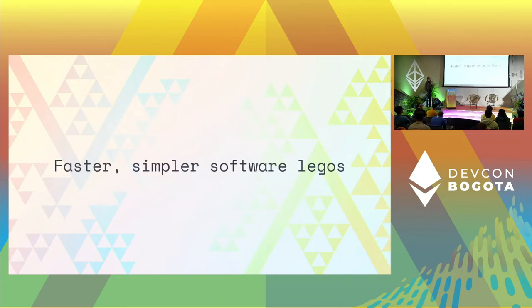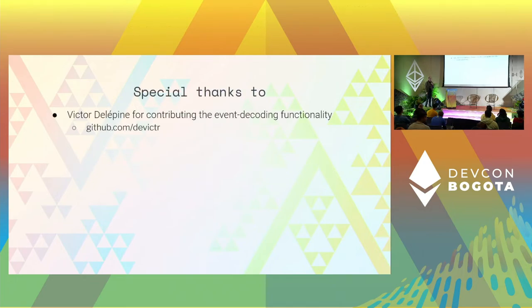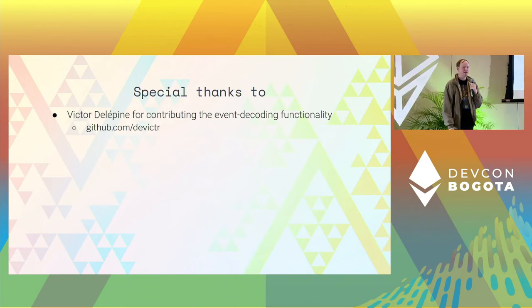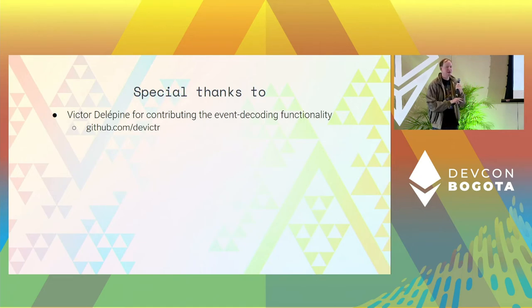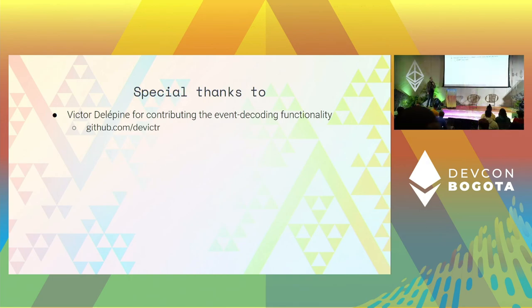What are the good use cases for this library? Dune Analytics started using it for ingesting large amounts of data so they can put it into databases and query it. If you have a lot of historical data lying around and want to decode huge amounts of it and gain insights, it's designed to work in every possible case — nested arrays, nested tuples, tuple arrays, structs. And there's no code generation, so it's all very traditional that way.